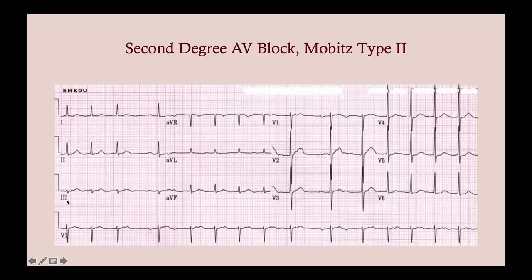Here's another Mobitz type 2 example. Again, you're seeing normal PR intervals and then a dropped beat. Mobitz type 2 is actually more severe and can cause a heart attack — it's a failure of the His-Purkinje cells. This is in contrast to Mobitz type 1, which is reversible and some patients are even asymptomatic.